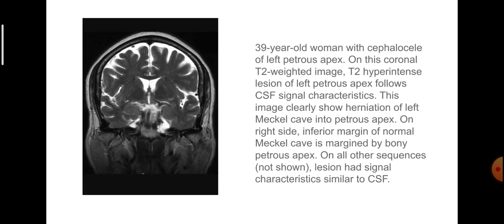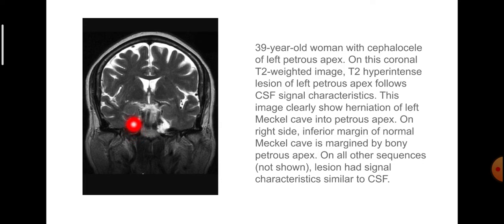This is a 39-year-old woman with cephalocele of the left petrous apex. On coronal T2-weighted image, the T2-hyperintense lesion of the left petrous apex follows CSF signal characteristics. The image clearly shows herniation of the left Meckel's cave into the petrous apex. On the right side, the inferior margin of the normal Meckel's cave is marginated by the bony petrous apex.